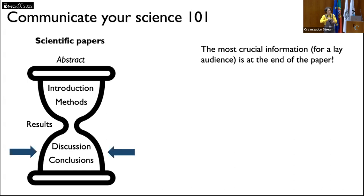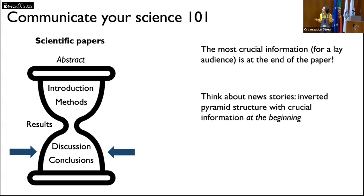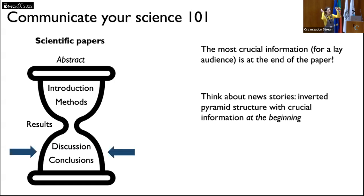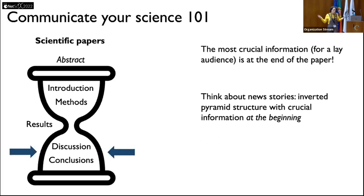When we want to communicate with lay audiences, we have to adjust this structure. Think about when you turn on the TV and hear a news story, or open the newspaper. The first information given is the most crucial: who did what, where, when, and why — the five W's, the main questions in journalism. They start with the crucial information at the beginning and then give context. If people stop reading midway, they have at least the main information, and you've grabbed their attention — because we are always in a competition for attention.